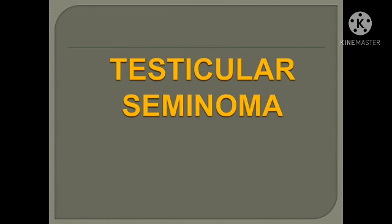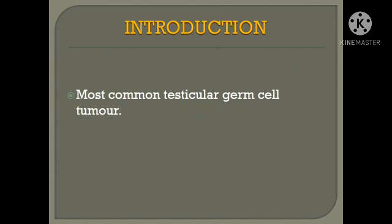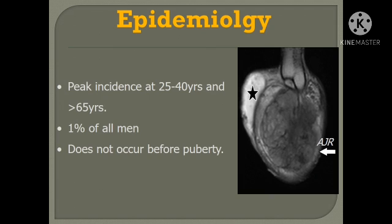I am going to discuss the gross specimen of testicular seminoma. This is also a short note question for you. Coming to introduction, testicular seminoma is the most common germ cell tumor of the testis. The peak age at presentation is 25 to 40 years and above 65 years.